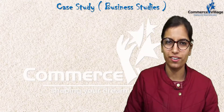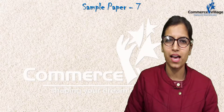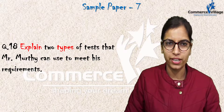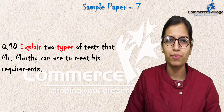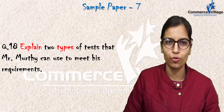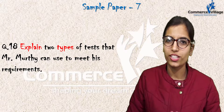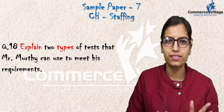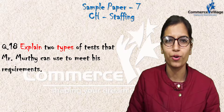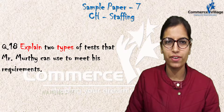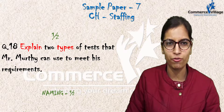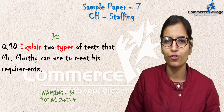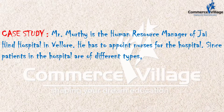Hello students, Priyanka here. We are discussing sample paper 7, question 18: explain two types of tests that Mr. Murthy can use to meet his requirements. This question is from the chapter on staffing, because only in staffing do we study tests on employees. You will be given half a mark for naming and one and a half marks for explanation, so in total 2 plus 2 equals 4 marks.